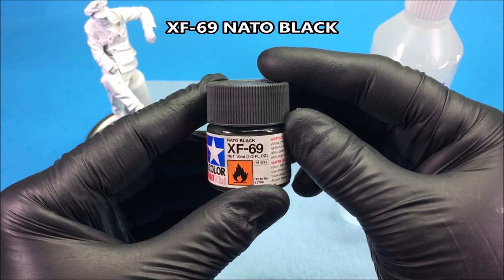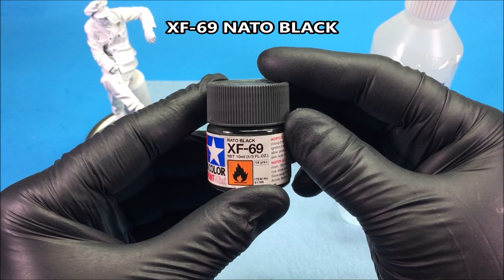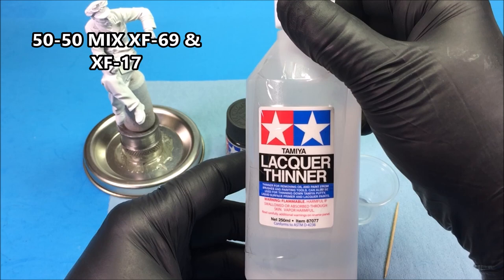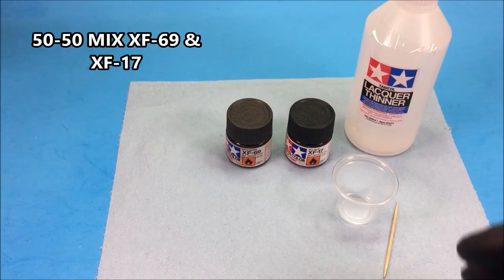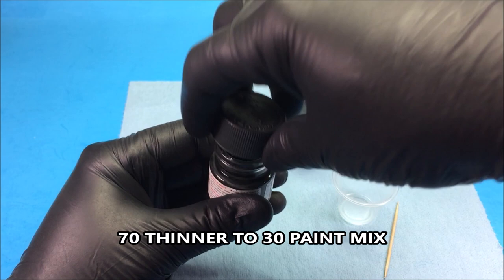Most of the time I'll spray my figures as if the light is coming from the top or from a 45 degree angle. So you'll want to always spray the darkest shade from below and your lighter shade from the top.